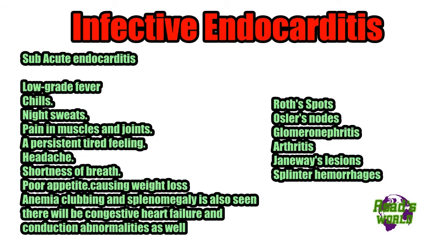Subacute endocarditis does not have a high fever; it has a low-grade fever, but there are still chills, night sweats, pain in muscles, persistent fatigue, headache, shortness of breath, and poor appetite causing weight loss. Anemia, clubbing, and splenomegaly are also seen.